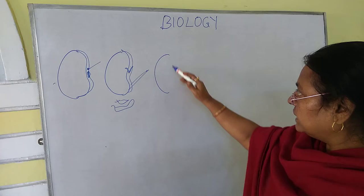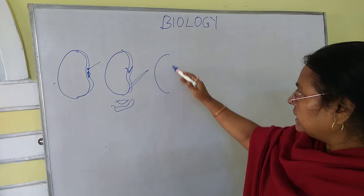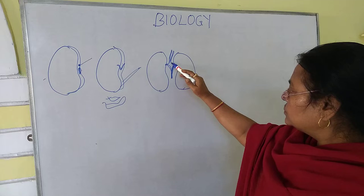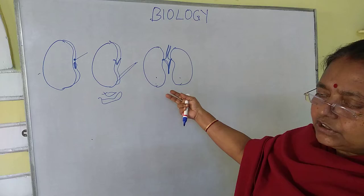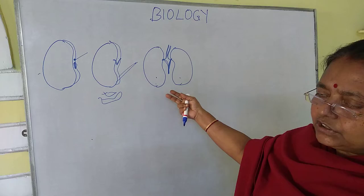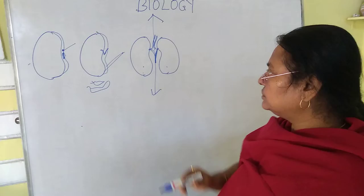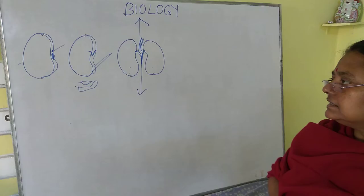Now let's open the two cotyledons and see what the seed looks like. You will find that the embryonal axis is attached to the cotyledons at one point. The portion above is known as the epicotyl with the plumule, and the portion below is known as the hypocotyl with the radicle. The cotyledons are elongated, white in color, thick and fleshy, and they store the reserved food material. There is no endosperm here — this is a dicotyledonous exalbuminous or non-endospermic seed.